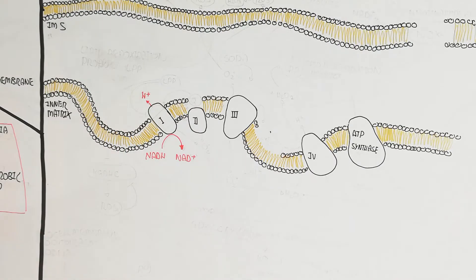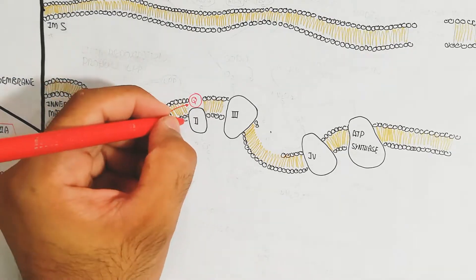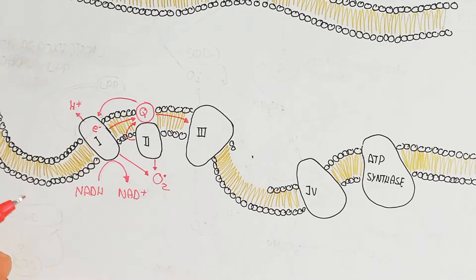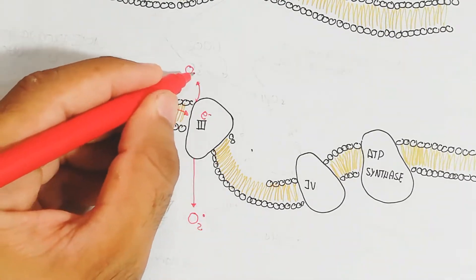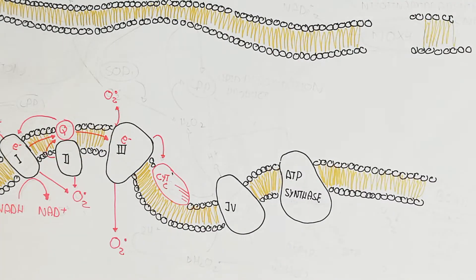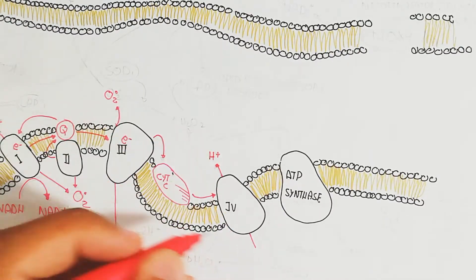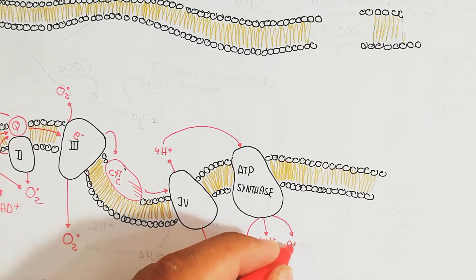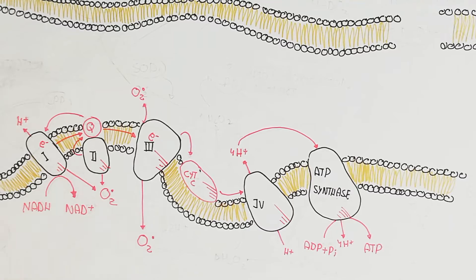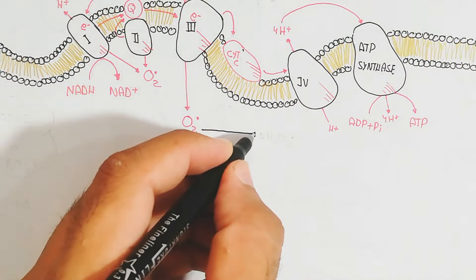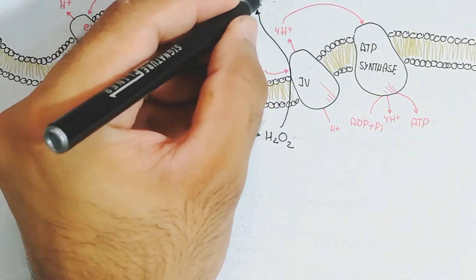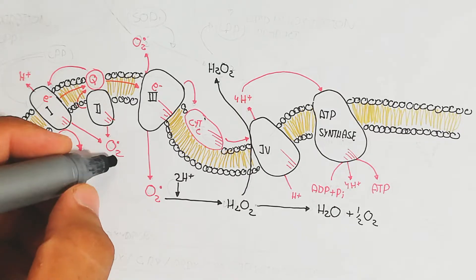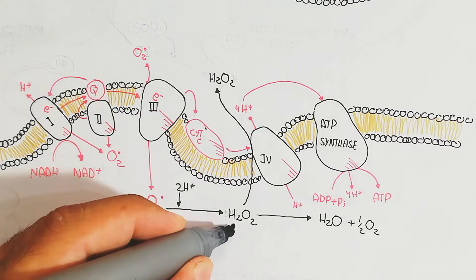The NADH to NAD+ conversion pumps protons out into the outer mitochondrial matrix. Quinone converts into ubiquinone after electron fixation, and this is where reactive oxygen species are produced — they can also move out as flux. Cytochrome C accepts electrons and donates them to complex IV of the electron transport chain, pumping four protons out, increasing acidity in the outer mitochondrial matrix. ATP synthase then drives influx of protons — four protons influx to produce one ATP. Meanwhile, reactive oxygen species by fixation of two protons convert into hydrogen peroxide, which is dangerous if not converted back into water and oxygen.